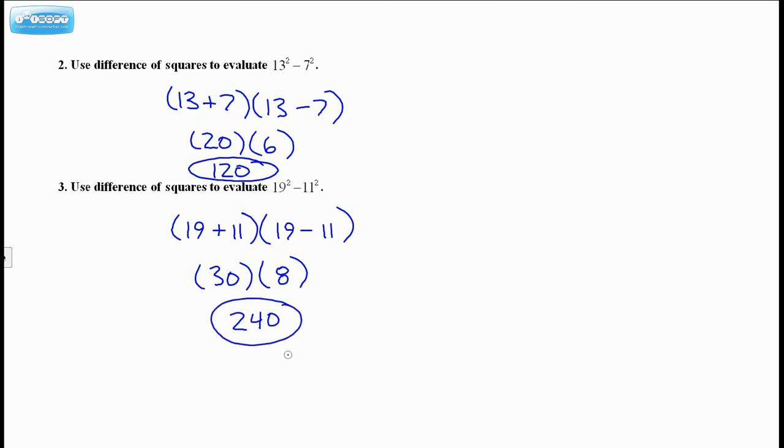And you could check with a calculator. 19 to the power of 2 minus 11 squared, you get 240. So it's possible to use a difference of squares to do some basic arithmetic. It's kind of fun.